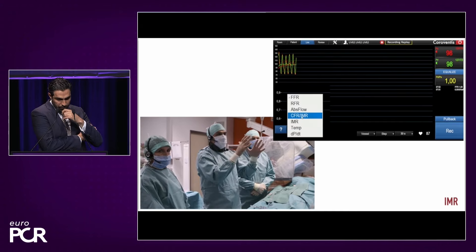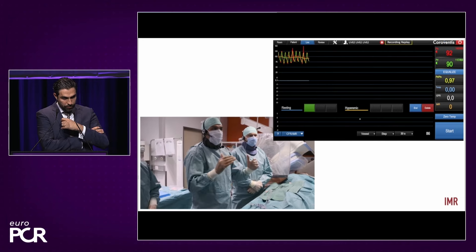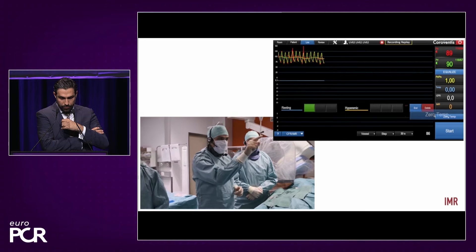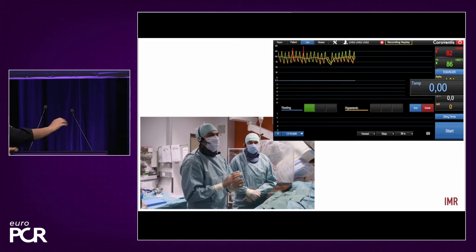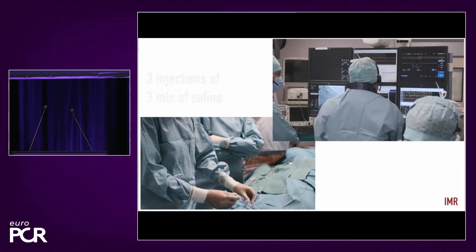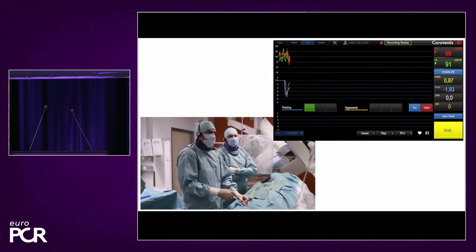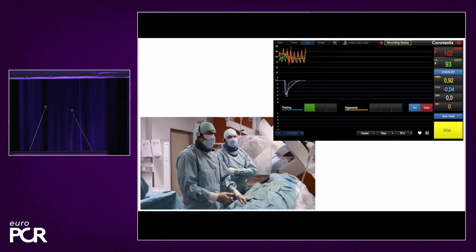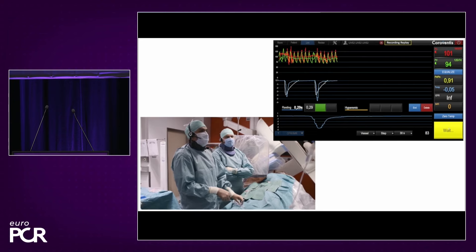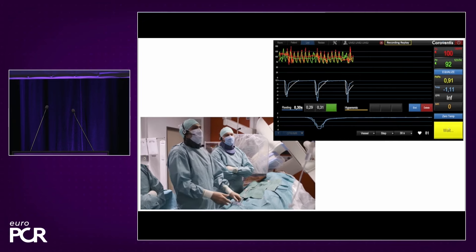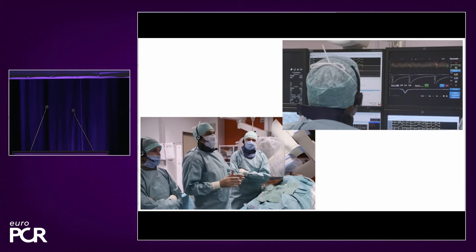To start CFR measurements, click on the CFR/IMR function on the CoroVentis screen. Before the first injection, zero the temperature — perform an equalization of temperatures between the shaft and the sensor by clicking the zero temp button. The temperature signal should read 0.00. We then start the CFR measurements, performing brisk saline injections to get thermodilution curves. The transit times at rest were 29, 30, and 31 — nearly identical, which is good. The resting mean transit time is 0.30.